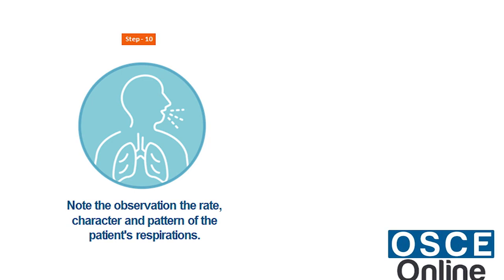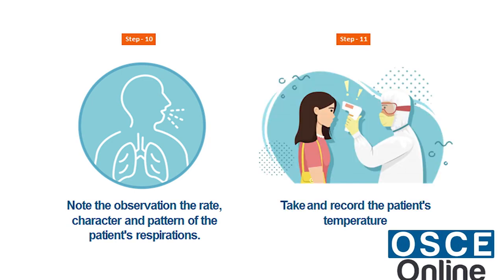Note the observations — the rate, character, and patterns of the patient's respirations, as respirations are controlled by different areas of the brain. Take and record the patient's temperature at specified intervals; damage to the hypothalamus, the temperature-regulating centre in the brain, will be reflected in grossly abnormal temperatures.